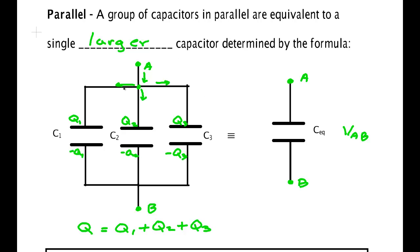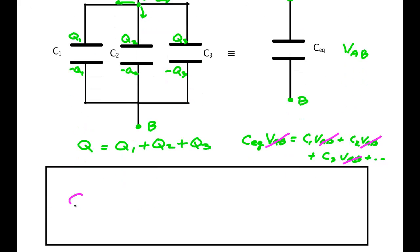So Q is equal to Q1 plus Q2 plus Q3. The charge supplied by some battery or whatever has to be split up to three plates. But the total charge that was supplied is the sum Q1, Q2 plus Q3. Now, Q equals CEQ times VAB, Q1 equals C1 times VAB, Q2 equals C2 times VAB, Q3 equals C3 times VAB and so on and so forth. But since the voltage is the same across each capacitor we can cancel it out and this gives us a wonderful formula for parallel which is that the equivalent capacitance is simply the sum of the individual capacitances: C1 plus C2 plus C3 plus however many ever.